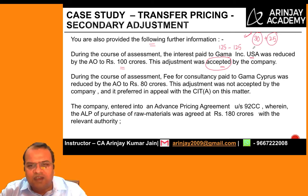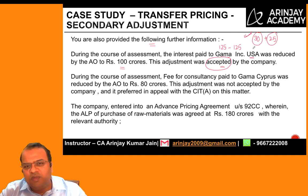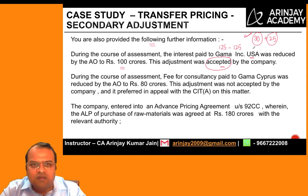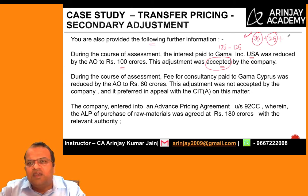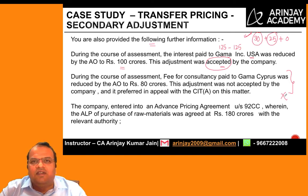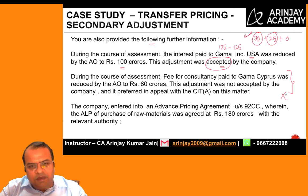Third, during assessment, fee for consultancy paid to Gamma Cyprus was reduced by the AO to 80 crores. This adjustment was not accepted by the company; it preferred an appeal with the CIT Appeals. Where a transfer pricing adjustment is disputed and under appeal, secondary adjustment cannot be made until the decision is rendered, so no adjustment applies here.